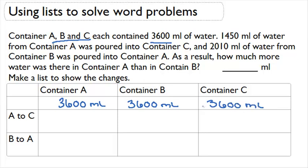Now, the second row, from A to C, goes with the second sentence. 1,450 mL of water from container A was poured into container C. So container B we haven't really dealt with here. That's going to stay the same. Nothing changed in container B.